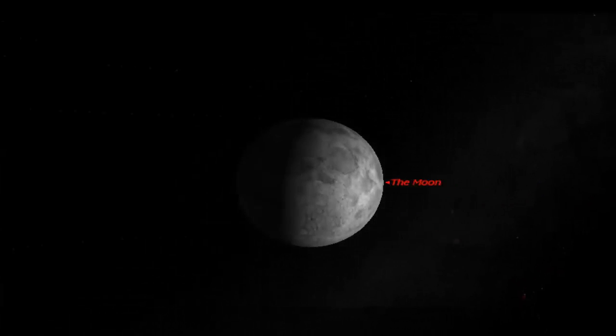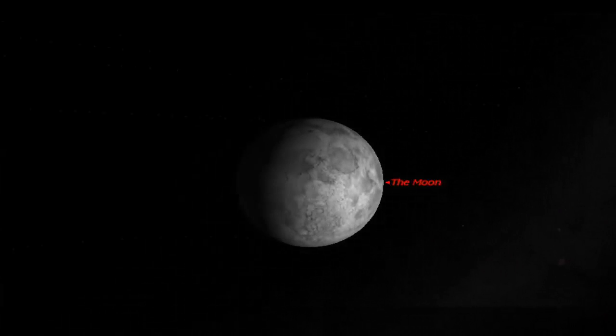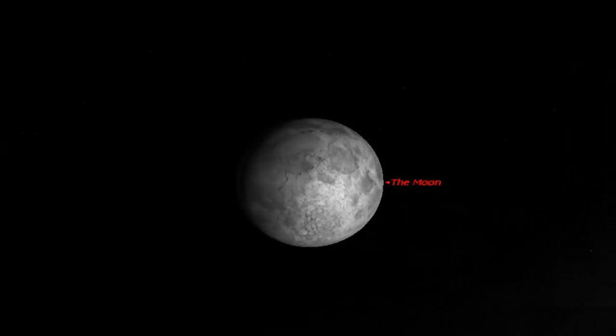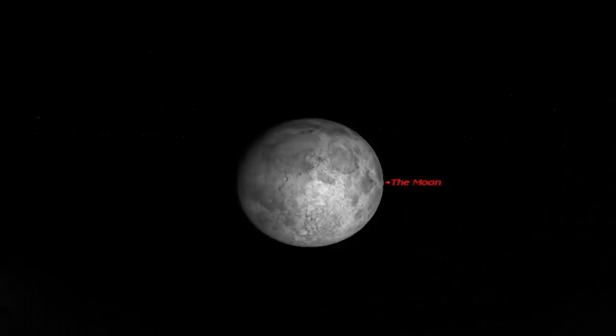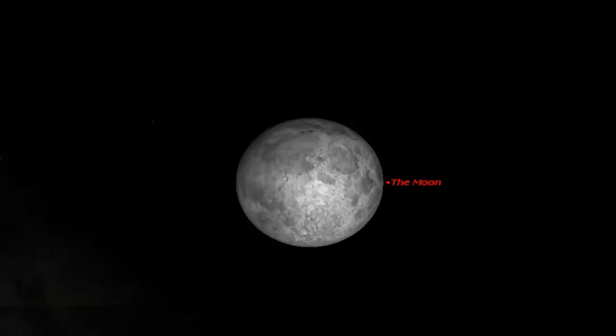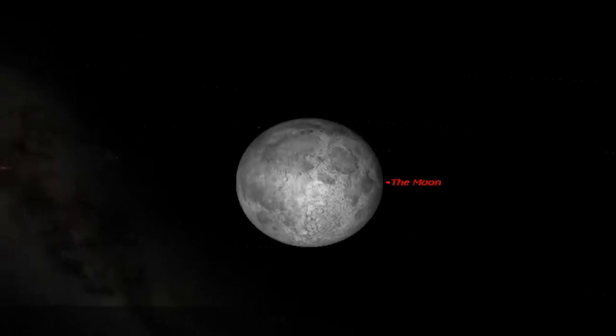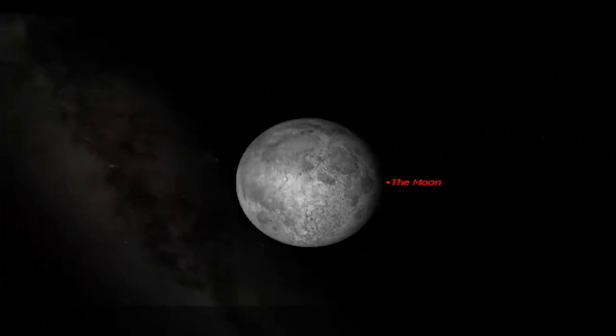As you walked around and changed the orientation of how you, the Earth, the moon, and the Sun all line up, depending on where you stand, you saw different parts of the moon being lit up, different parts in shadow, and that's what actually causes the phases.